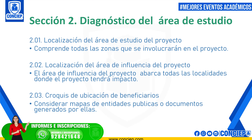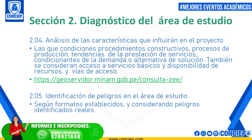In Section 2, the diagnosis section, you will find information that will later serve to establish verification points. In the localization of the study area, you must enter all the area involved with the project. In the area of influence, you will indicate all areas directly or indirectly affected by the project. In the location sketch, you will incorporate maps indicating the public and private entities involved, their addresses, and travel times from the capital to that specific point. You must verify the characteristics that will determine the project and also conduct a proper hazard identification study in the study area.